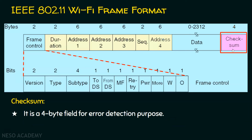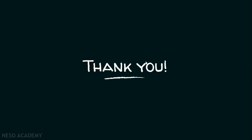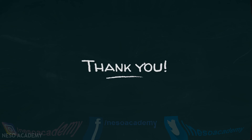The last field is the checksum field, which is 4 bytes, used for error detection. I hope now you know the various fields involved in the IEEE 802.11 frame format and also the subfields of the frame control field. I hope you enjoyed the session — thank you for watching.